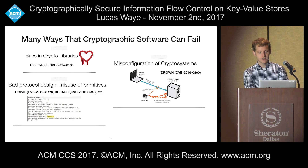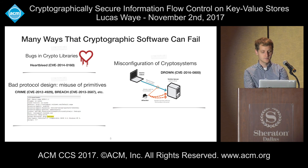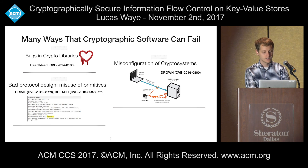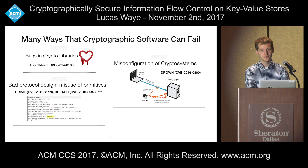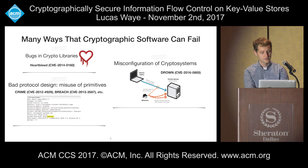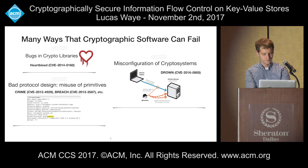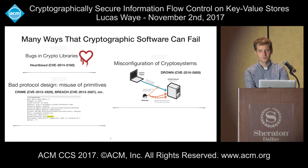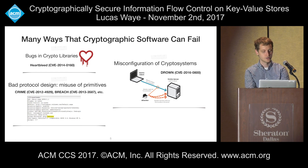For example, the CRIME and BREACH attacks leverage a compression side channel, where although the messages themselves were properly encrypted, the web server software would separately leak the size of the compressed unencrypted message, which could be used in conjunction with knowing the compression algorithm to recover the original unencrypted message. There's also a tremendous number of configuration options for cryptosystems, and improper configuration can undermine their security guarantees.